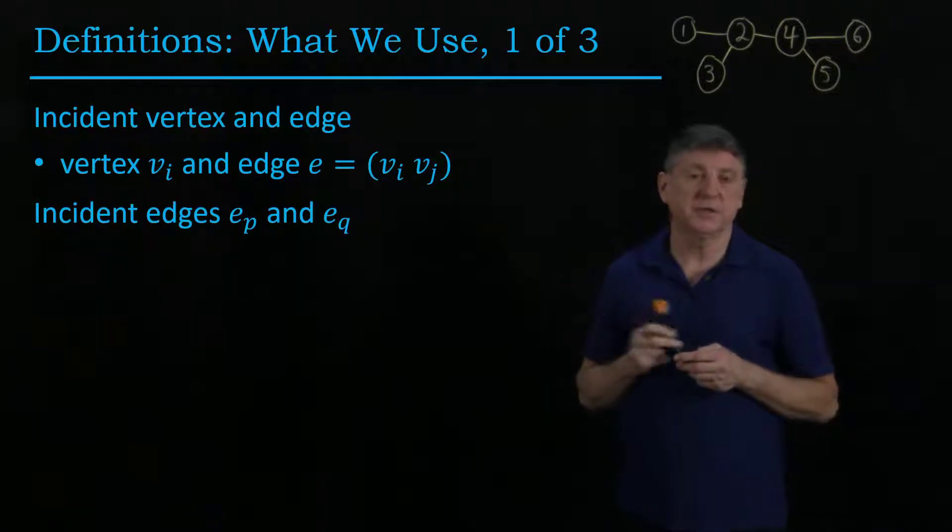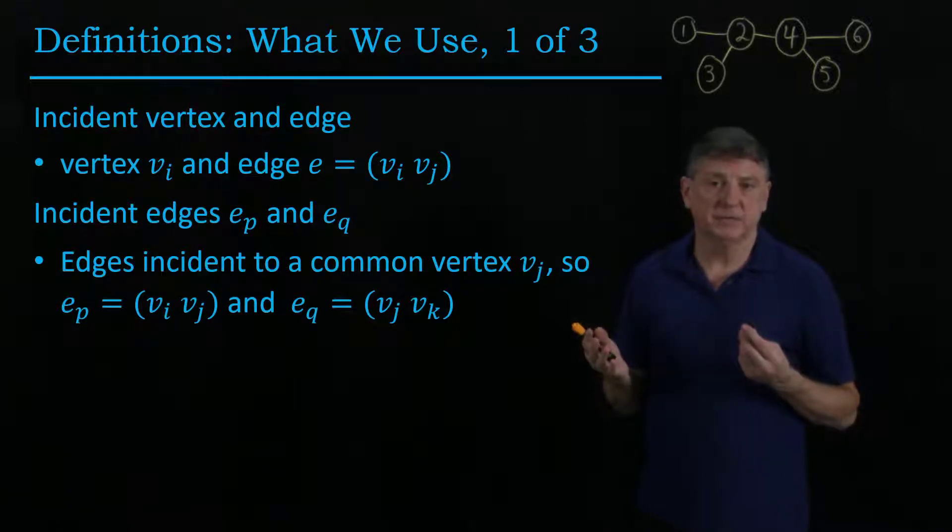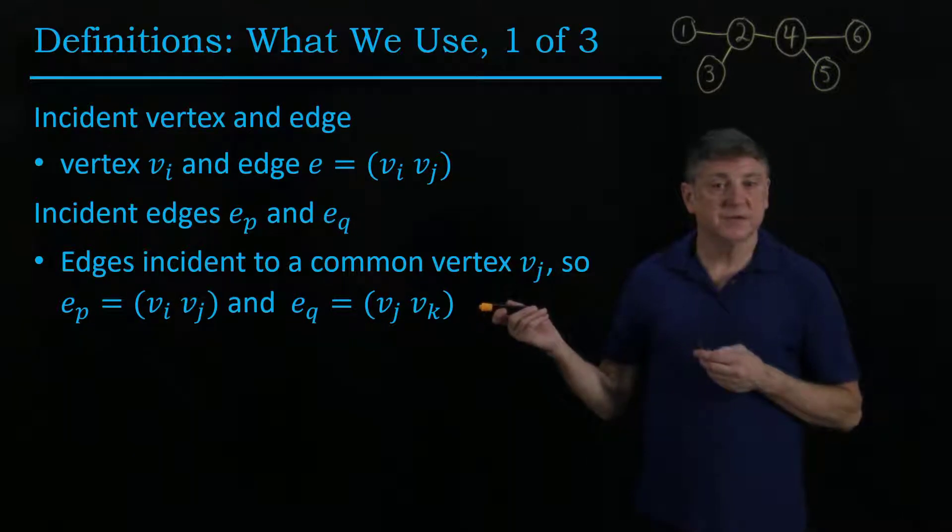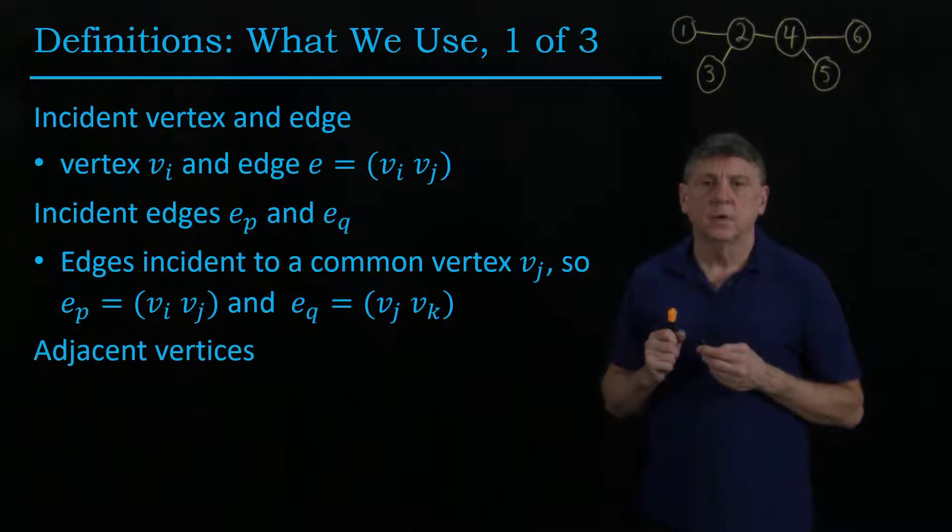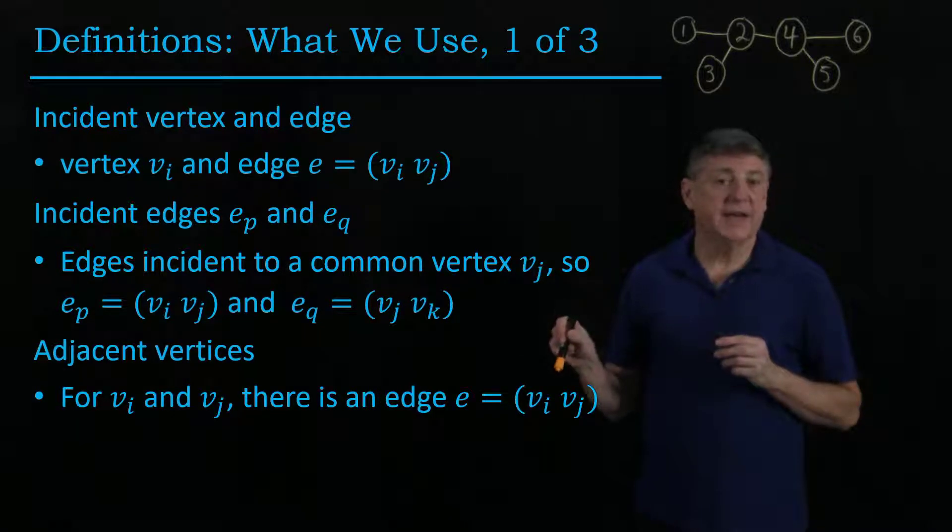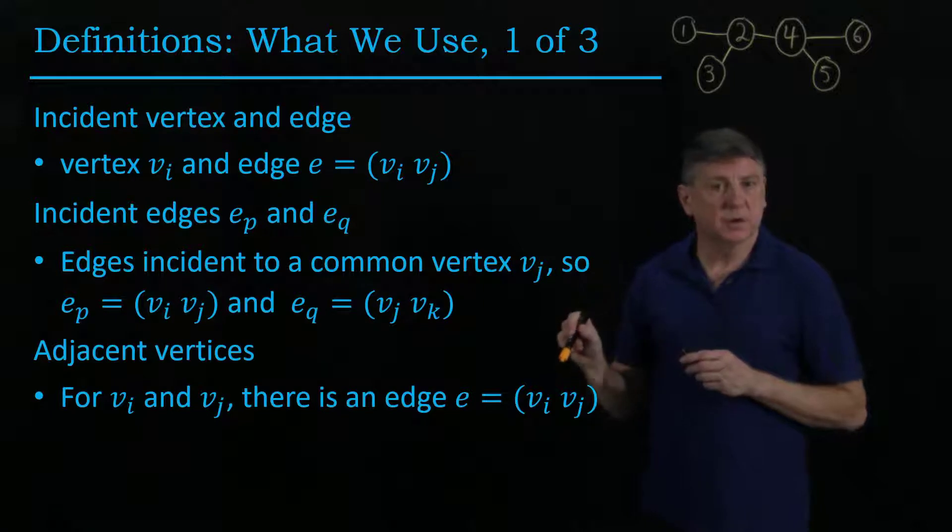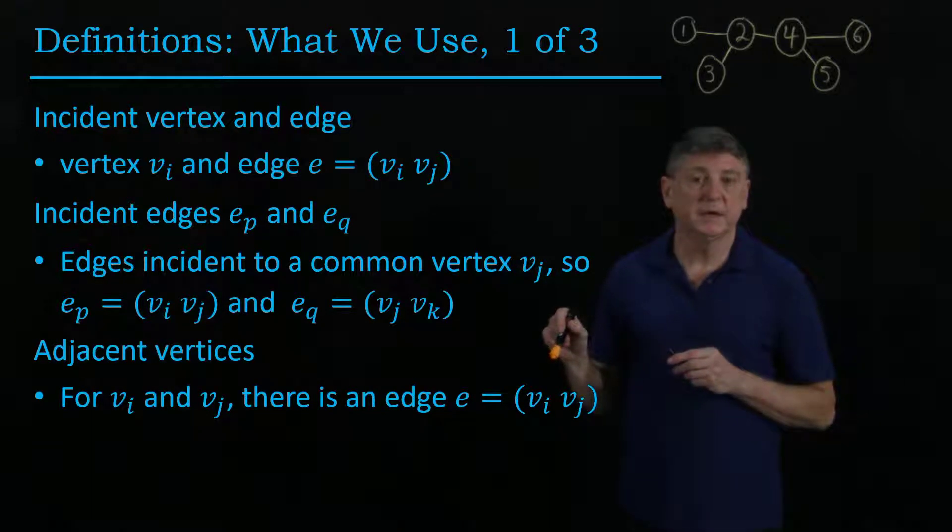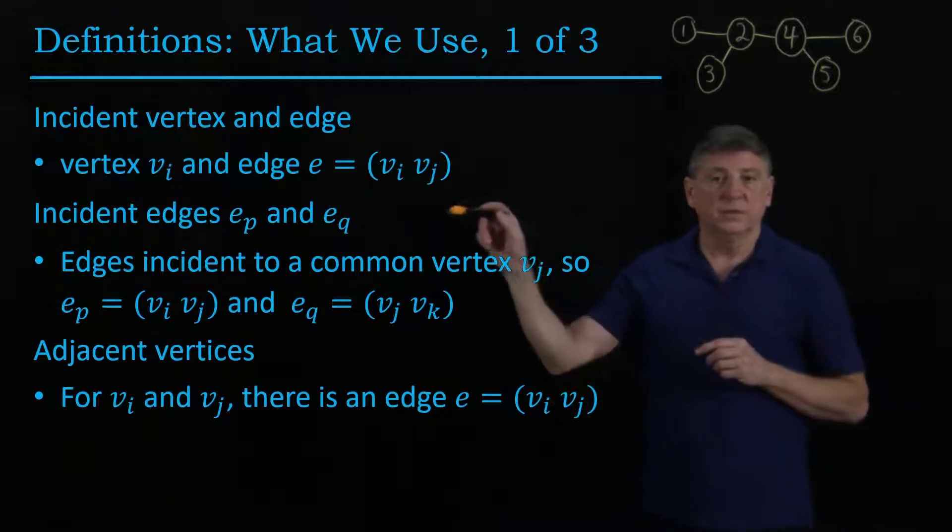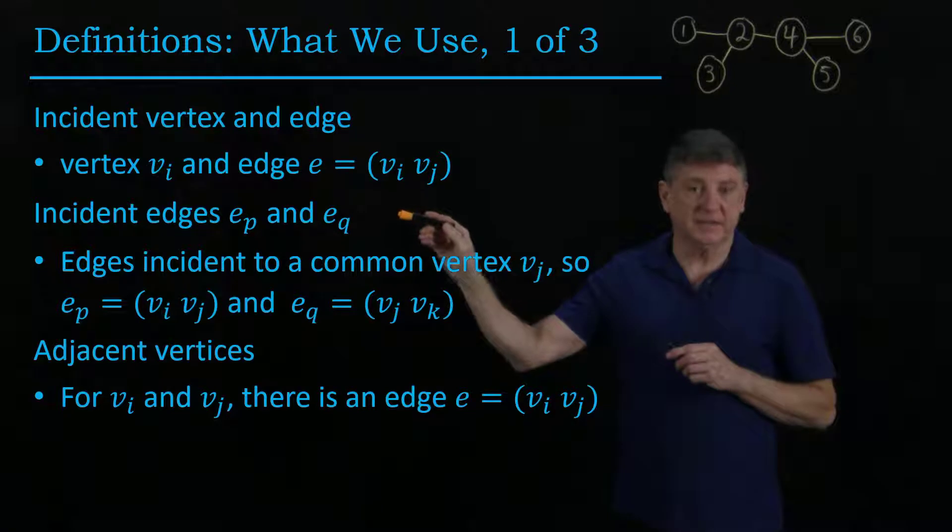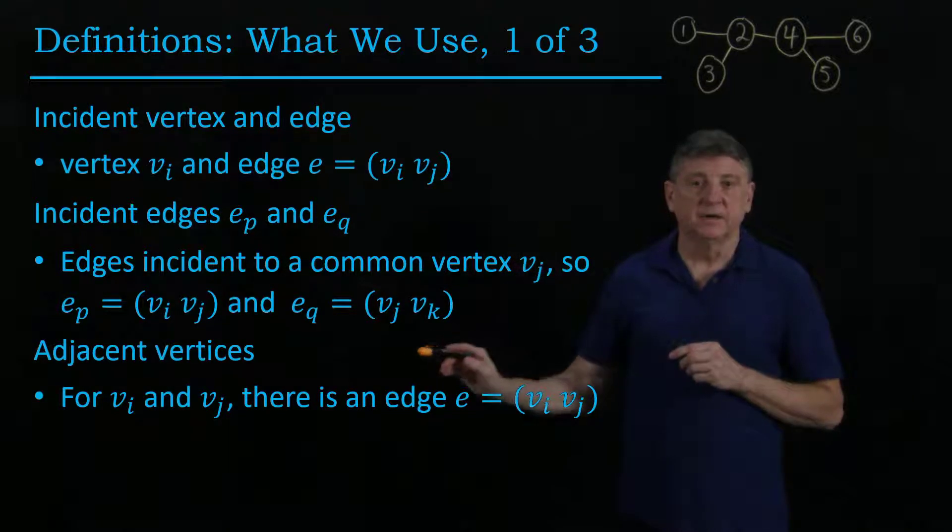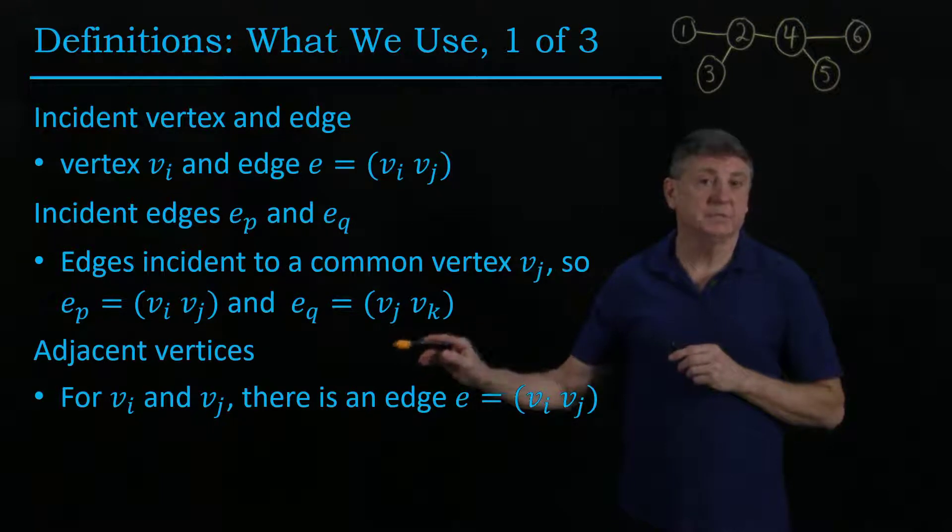When two edges are incident, what we mean is that they have a common vertex. That is, there's some vertex vj that appears in each of these edges. When we say that vertices are adjacent, we mean that there is an edge that connects them. And let's recall that we're not permitting edges to be repeated, so this will be a unique edge. To repeat, edges are incident when they share a vertex, and vertices are adjacent when they're connected by an edge.